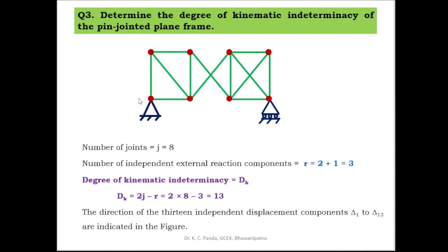Counting the total independent displacements: 2, 4, 6, 8 at the free joints, then 1 at the roller (9), plus additional joints giving 11 and 13. Total of 13 independent displacement components take place in this problem.